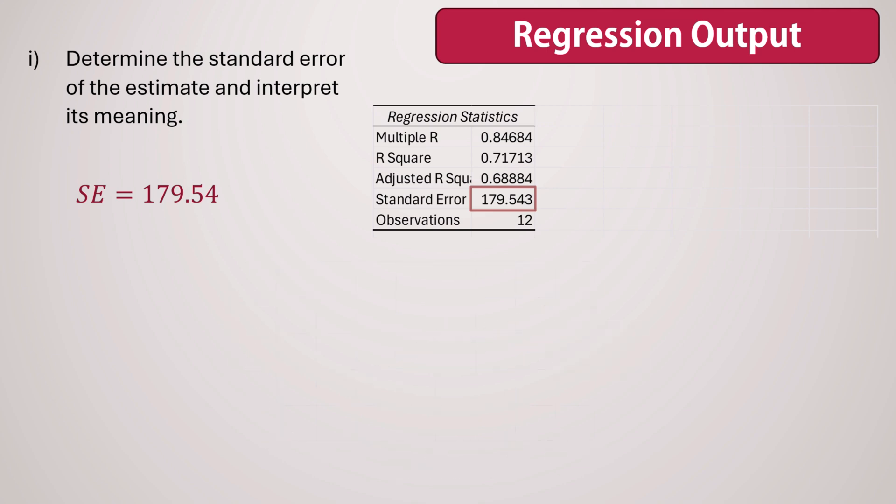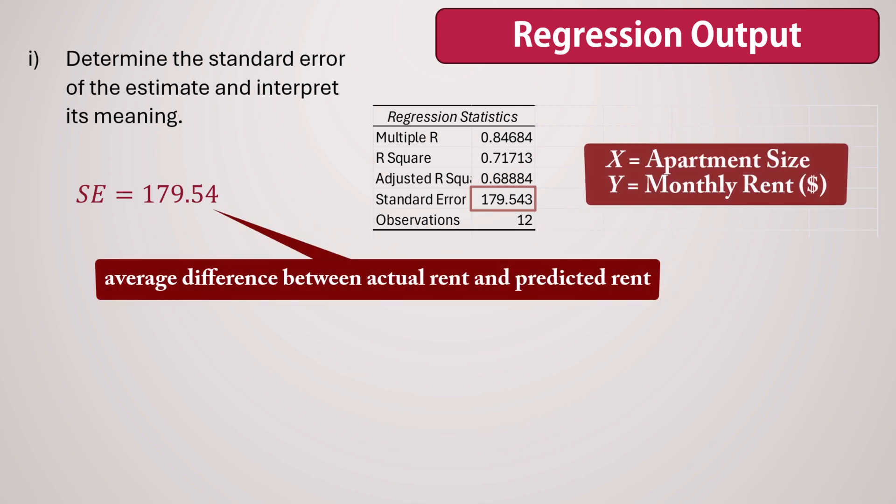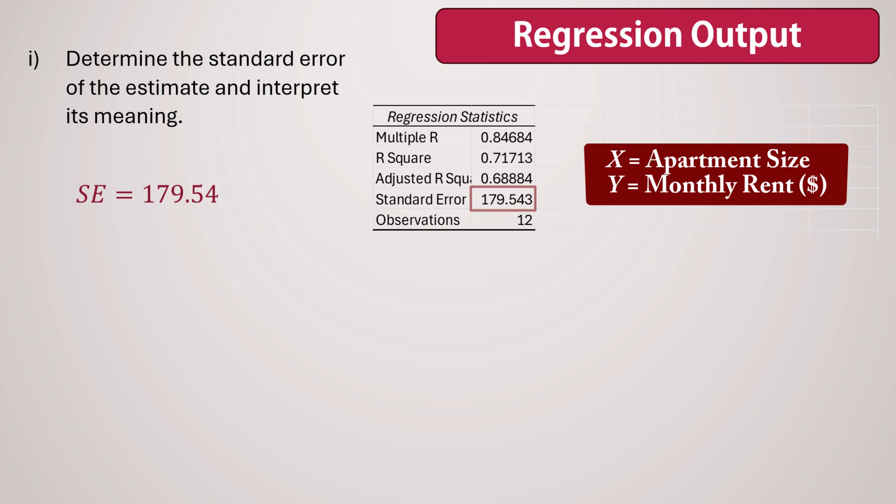In this context, this 179.54 represents the average difference between the actual monthly rent and the rents predicted by our model. In essence, on average, the model's prediction of monthly rent may be off by about $180 in either direction. This means that if the model predicts a rent of $2,000 for an apartment, the actual rent is likely to fall somewhere between $1,820 and $2,180 on average.